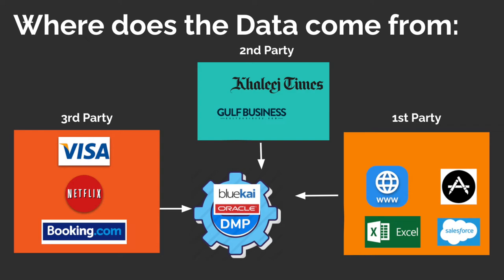Second-party data is when publishers who use DMPs collect their data and sell it through DMP. For example, I as an advertiser can reach out to Gulf Business and ask them to sell me data about users who visit a particular section of their website. Oracle cannot sell this data — only Gulf Business can. We can complete this transaction through Oracle BlueKai DMP and this model of data buying and selling is called the second-party data pool. It is probably the least used data injection method in a DMP.